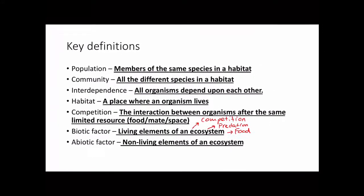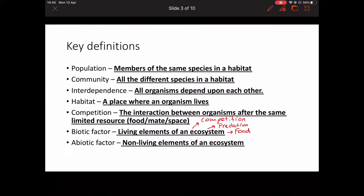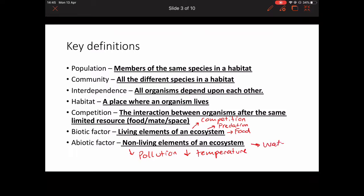For abiotic factors — non-living elements, things that don't actually live — examples would be things like pollution, maybe temperature, the availability of water, and sunlight. Again, there are loads of examples; it's worth knowing a few because you might be asked to list them.